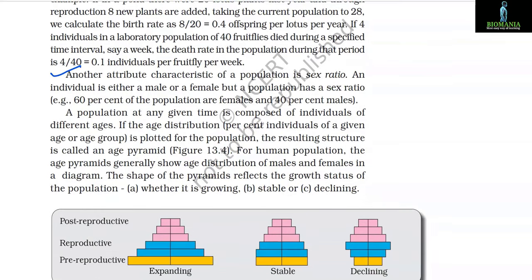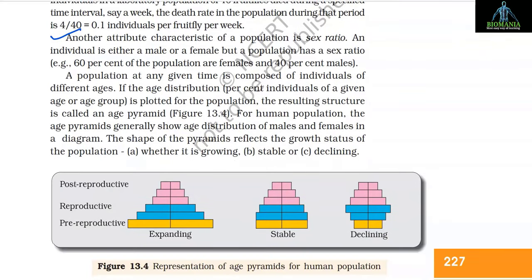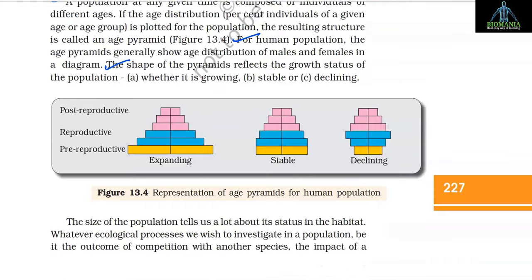Another attribute of a population is sex ratio. An individual is either male or female, but a population has a sex ratio. A population at any given time is composed of individuals of different ages. If the age distribution is plotted for the population, the resulting structure is called an age pyramid. For human populations, the age pyramids generally show the age distribution of males and females in a diagram. The shape of the pyramid reflects the growth status of the population — whether it is growing, stable, or declining.